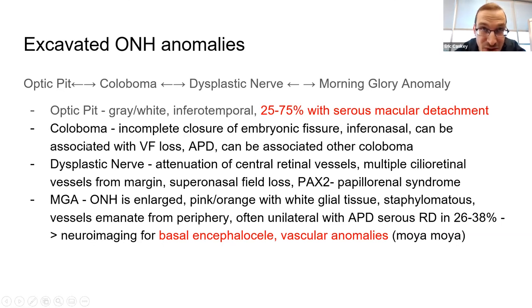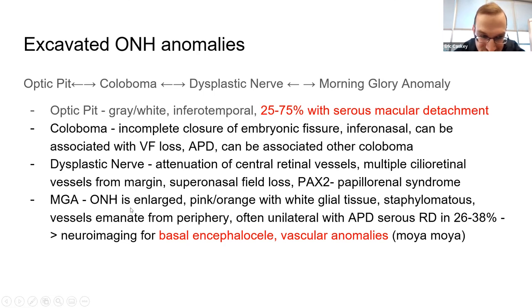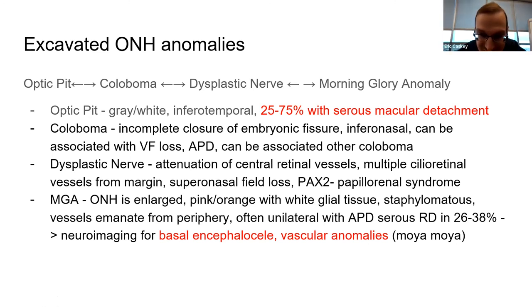An aplastic nerve has a very distinct egg-white appearance. You'll typically have central retinal vessel attenuation and may even have peripheral non-perfusion, associated with papillorenal syndrome. Morning glory anomaly can also have peripheral non-perfusion — image these patients because you're thinking of vascular anomalies like Moyamoya or basal encephaloceles, which are important not to inadvertently excise.